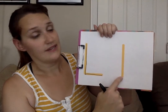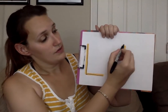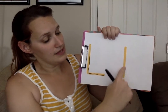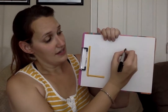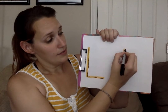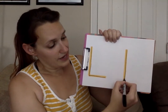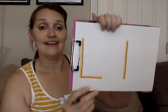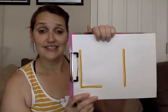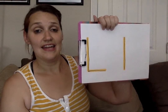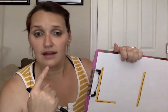Next we're going to do our lowercase l. We start at the top. I'm going to use my finger first and we're going to go big line down. Ready? I'm going to use my marker. I'm going to go big line down. I made the letters L. L and L makes the sound.